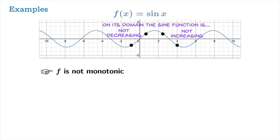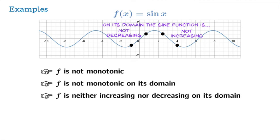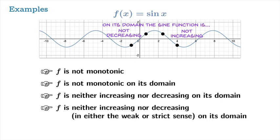Imagine someone walking into this conversation and you say "f is not monotonic." They ask: what set are you talking about? So you clarify: f is not monotonic on its domain. Then someone else asks what monotonic means, and you say: f is neither increasing nor decreasing on its domain. Yet another person asks about weak versus strict, and you say: f is neither increasing nor decreasing in either the weak or strict sense on its domain. You can perhaps see why we tolerate ambiguity in our discussions — because these increasingly specific ways of describing the situation get more and more cumbersome as you demand more and more explicit articulation. That's why we have the definition of monotonic: to collect two ideas at once and not have to say them explicitly.